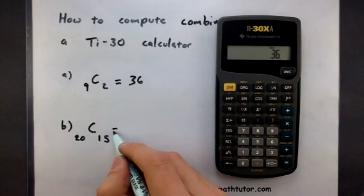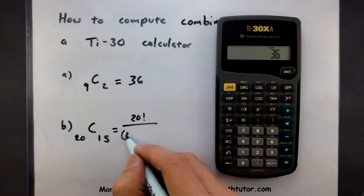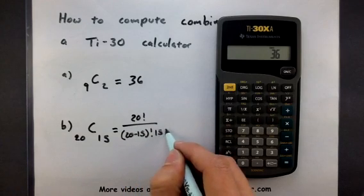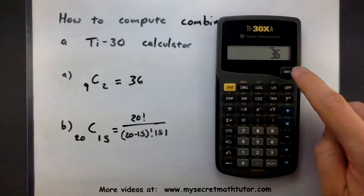Now keep in mind, you could do this using the formula. Say by taking 20 factorial, divided by 20 minus 15 factorial, multiplied by 15 factorial. But, as long as you have the calculator, you might as well have it do the heavy lifting.